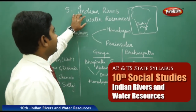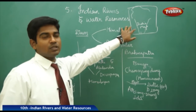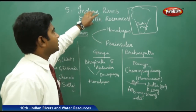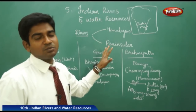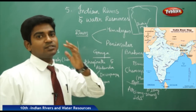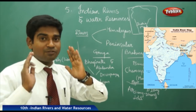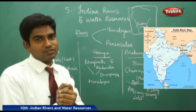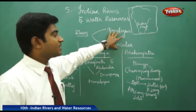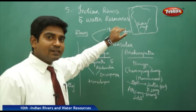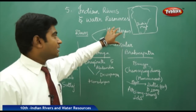Now we shall discuss about the Indian rivers and water resources. Before going into water resources, let us see what the Indian rivers are. The entire Indian river system is known as the drainage system — not drainage in the literal sense, but the complete flow of all rivers is known as the drainage system. We have mainly divided the entire rivers into two major categories: the Himalayan rivers and the Peninsular rivers.